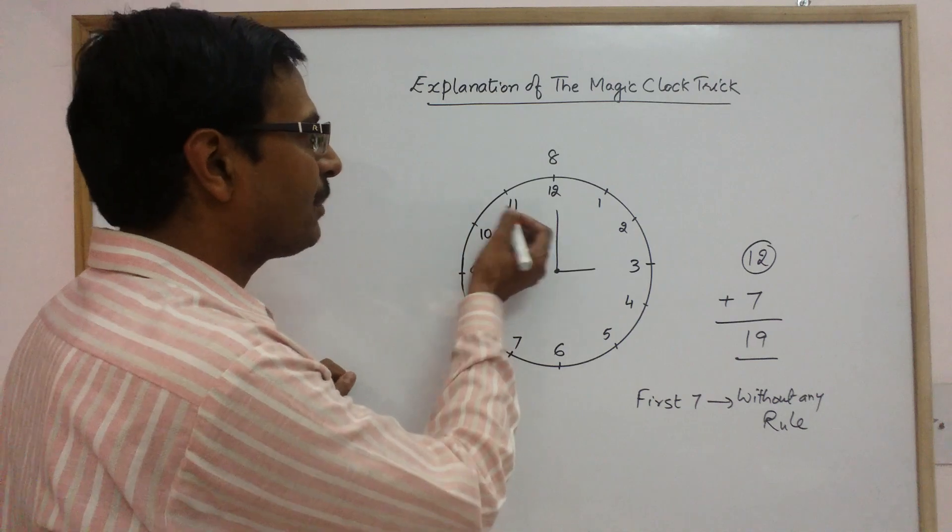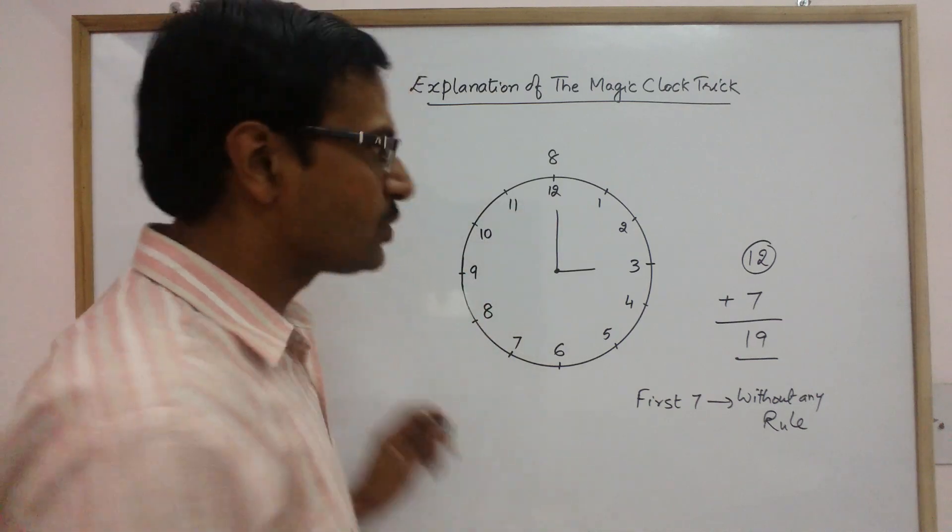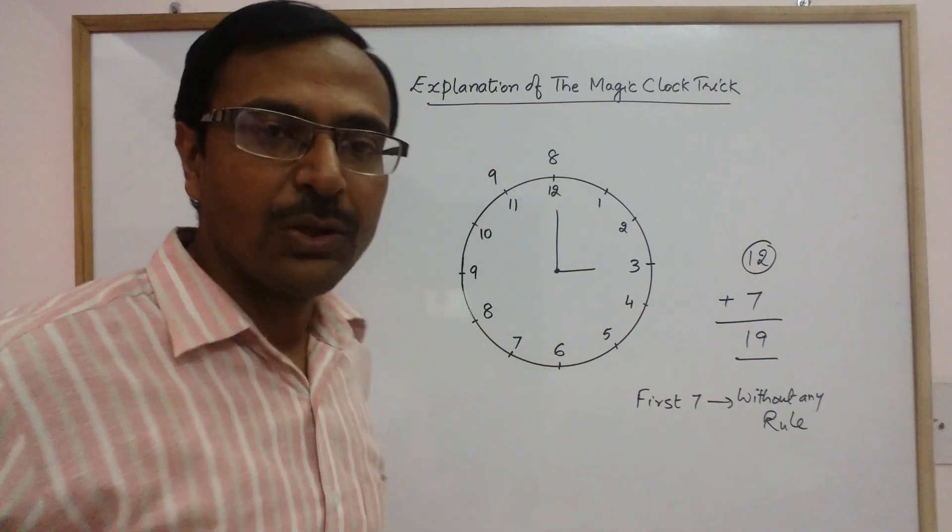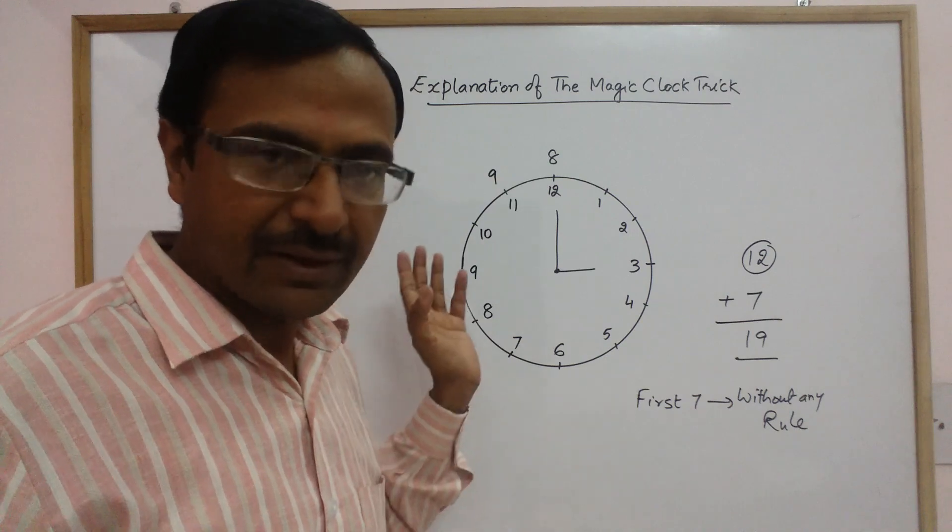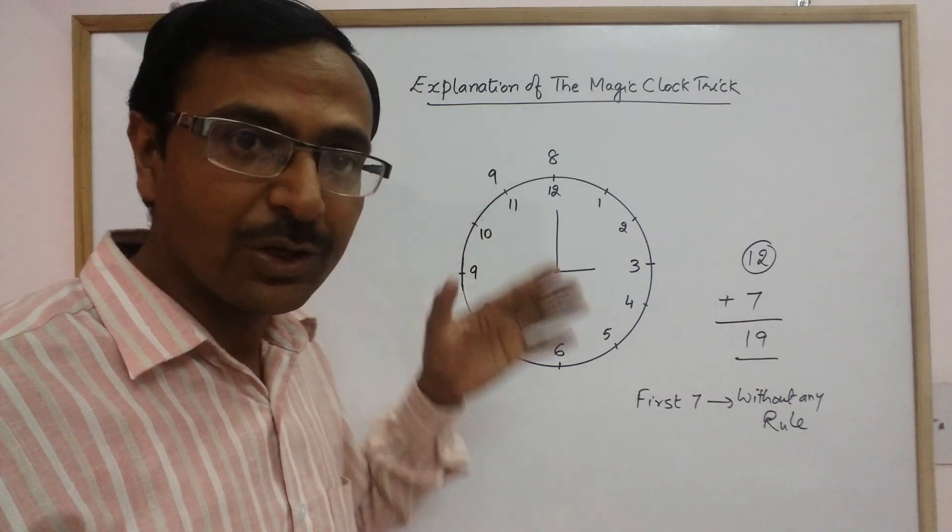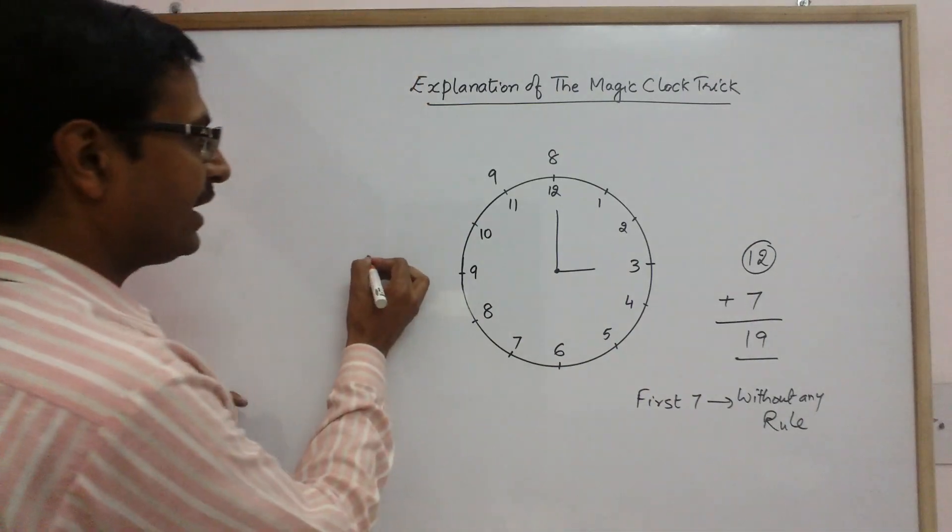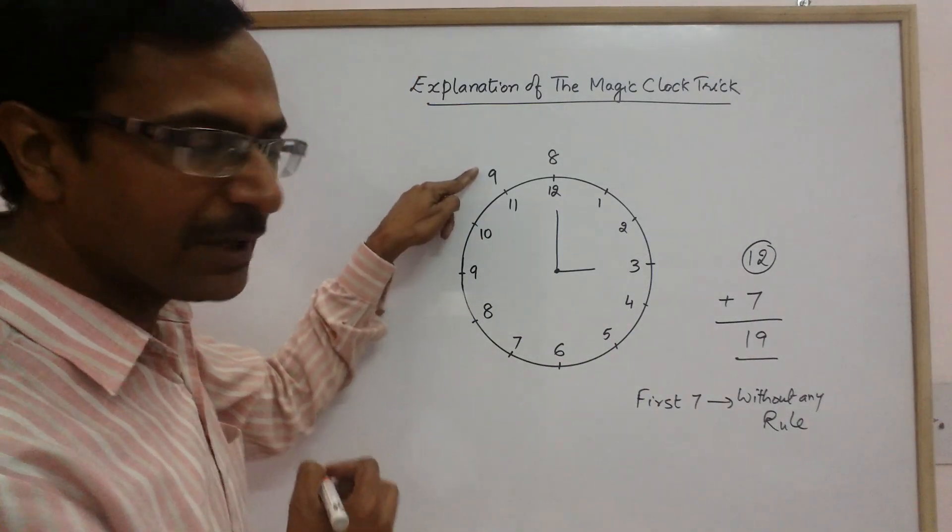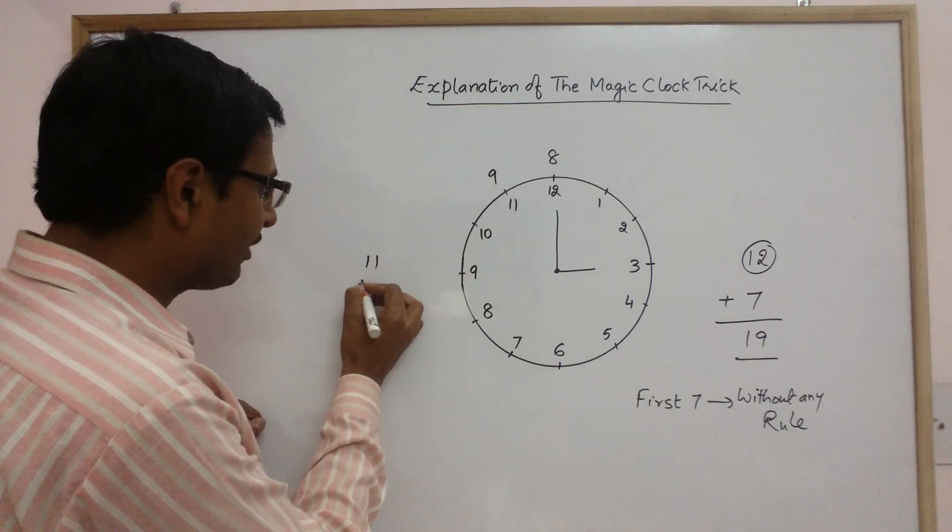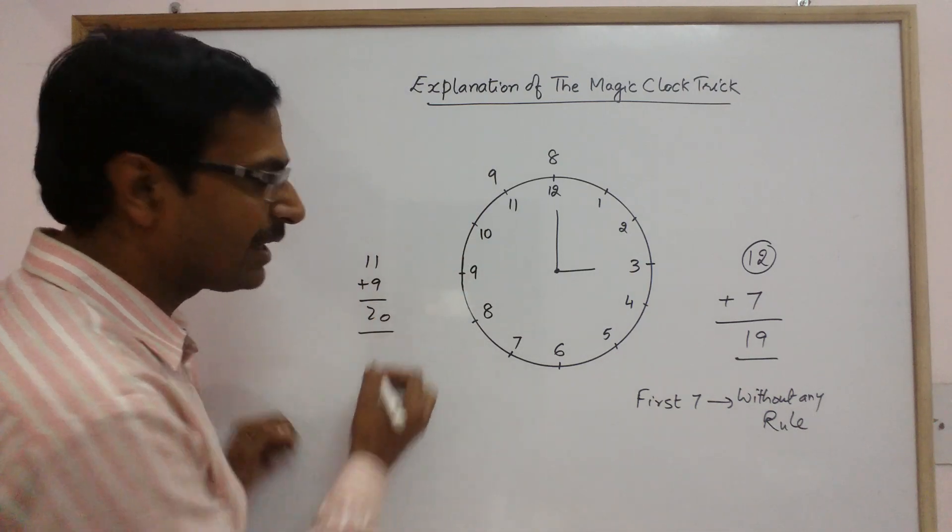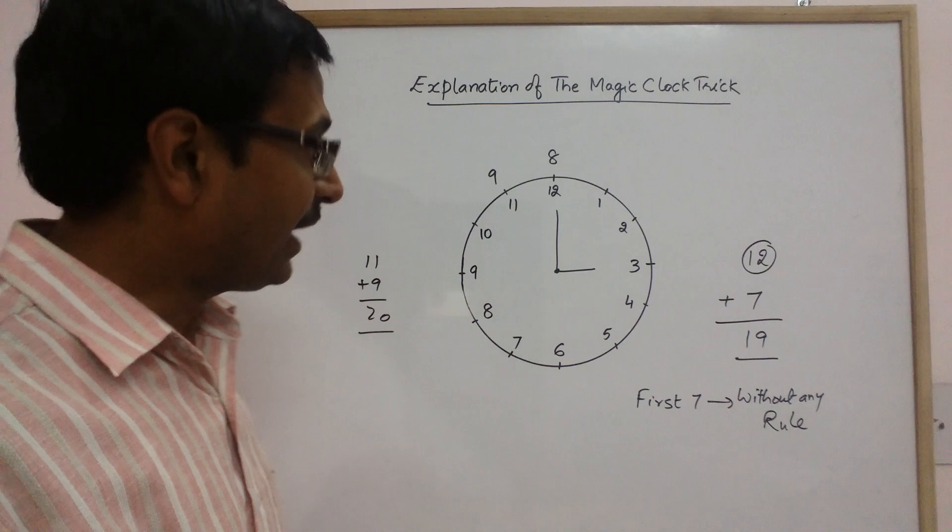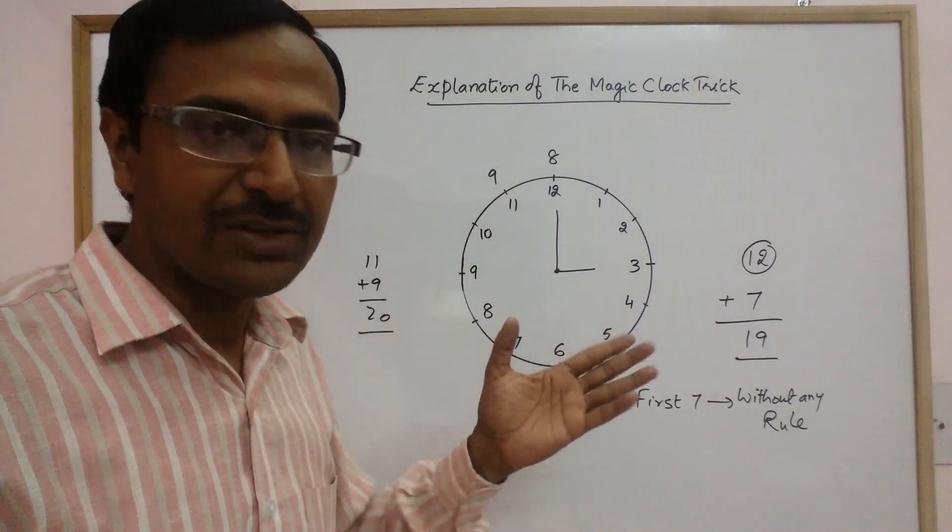Now eleven plus nine is twenty. So ninth one, you always keep on eleven. So why? Because eleven plus nine is again twenty. So if the person has thought of eleven in his mind, you are keeping the ninth one on eleven. So eleven plus nine in his mind, he will complete twenty, and at that time you will be on eleven which he has thought.